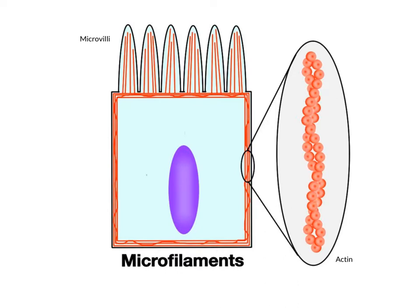A large concentration of microfilaments is located directly under the cell membrane, functioning in support for the cell. This is similar to a thick woven mat that helps provide structure and support for the plasma membrane above, and also to support specialized cell features like the microvilli that aid in secretion and absorption within epithelial cells of the GI tract.